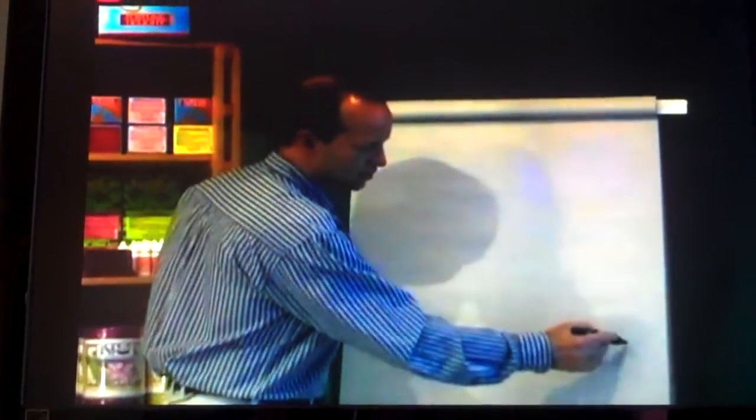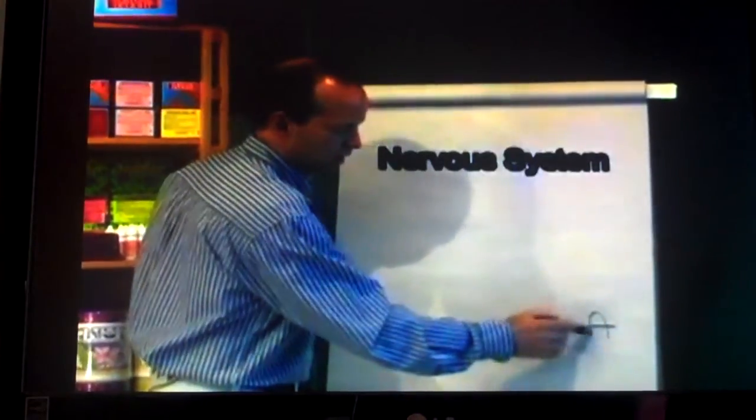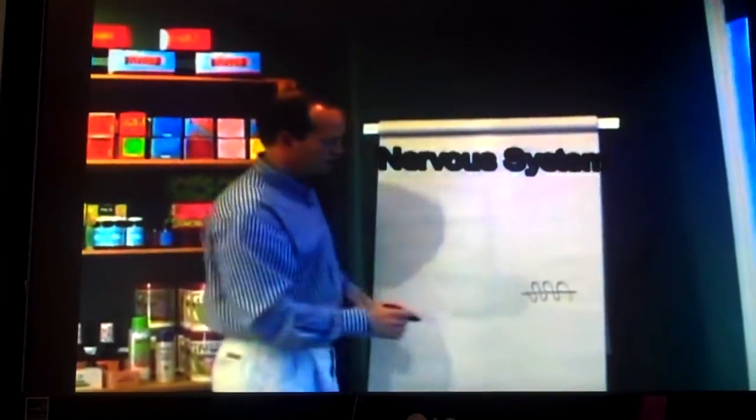So, for example, here's your nervous system. And so that's a nerve, and that's the myelin sheath that goes around the outside.